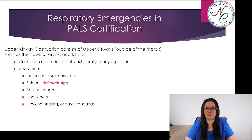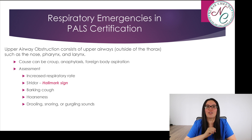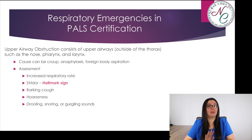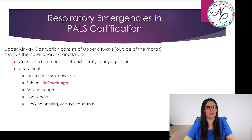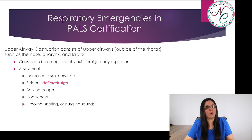Let's talk about some upper airway obstructions. This consists of the nose, the pharynx, and the larynx. Causes can be croup, anaphylaxis, foreign body aspirations — which is a big one — and upper airway obstructions. Assessments include increased respiratory rate, stridor — a hallmark sign of upper airway obstructions — barking cough, hoarseness, drooling, snoring, or gurgling sounds.